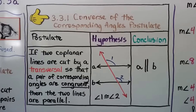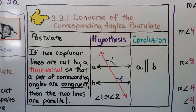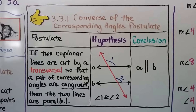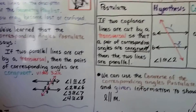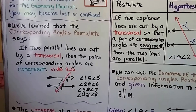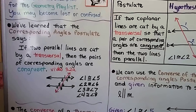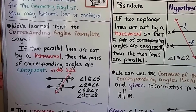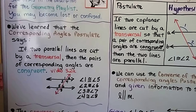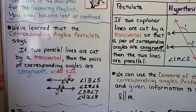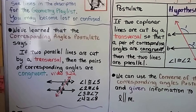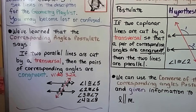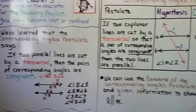If 1 and 2 are congruent, then A is parallel to B. In the original postulate, it said if A is parallel to B, then 1 and 2 are congruent — or 1 and 5 are congruent, whichever angle pairs are congruent. So it flipped it around.